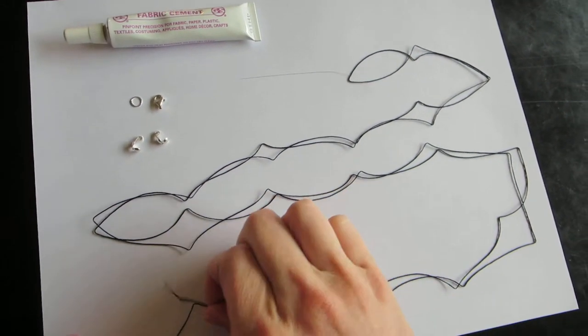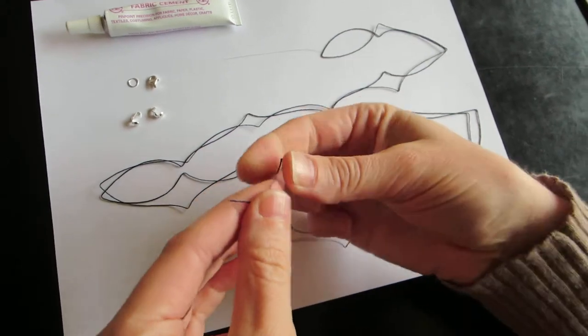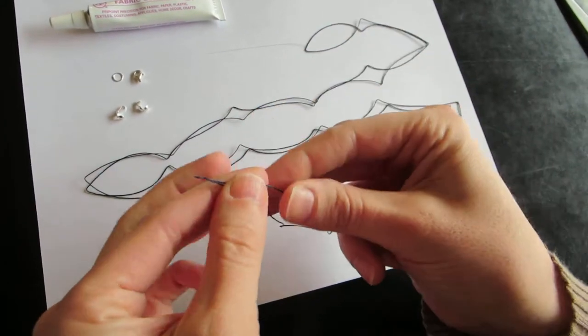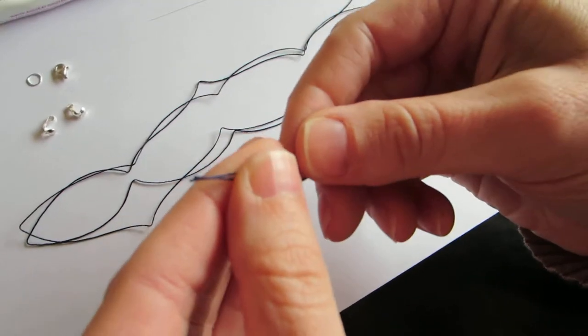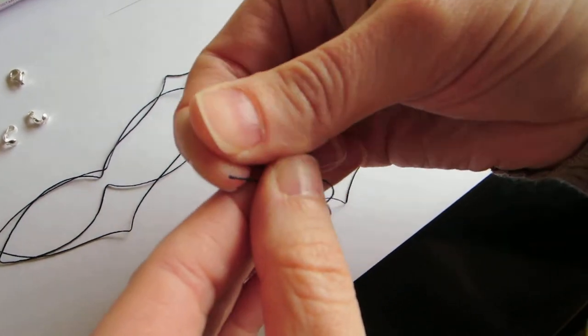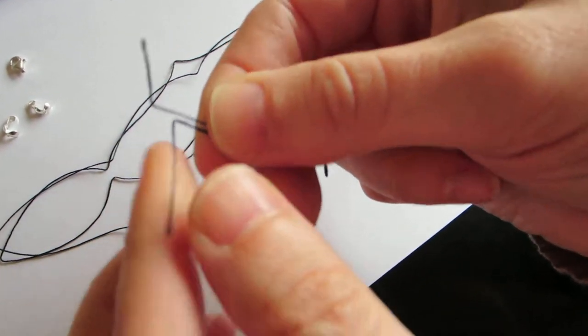The first step for putting on a clamshell is to tie a knot. Here I'm taking the two ends of my silk cord and making them even, and then I'm going to tie a simple overhand knot.